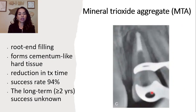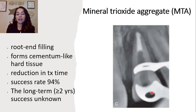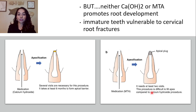MTA — mineral trioxide aggregate — is also used for apexification. It's a root-end filling that forms a cementum-like hard tissue. The advantage is a reduction in treatment time compared to calcium hydroxide, with a success rate of 94%. However, the long-term effects of MTA use are still unknown. Importantly, neither calcium hydroxide nor MTA actually promote root development, and we know immature teeth are vulnerable to cervical root fractures.